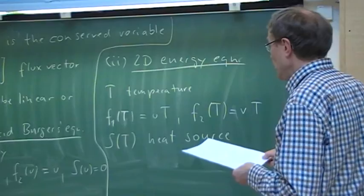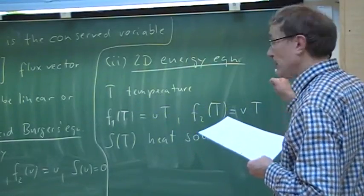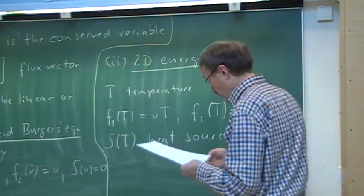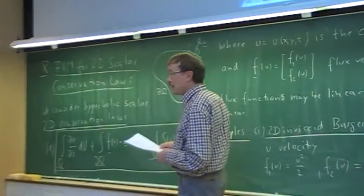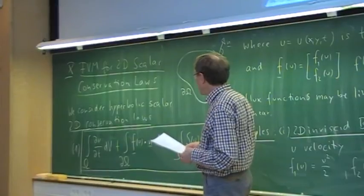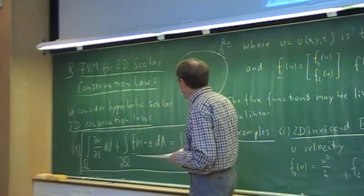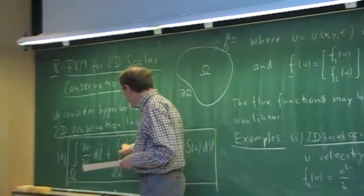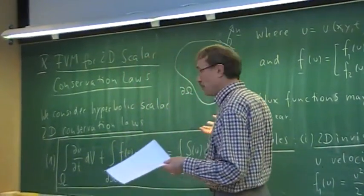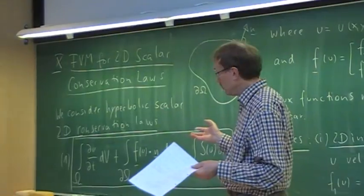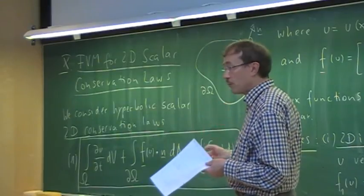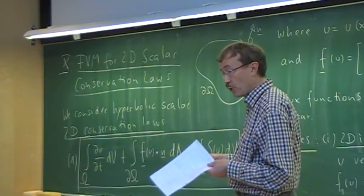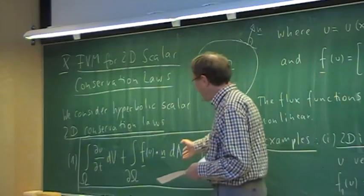So those are our examples: one nonlinear-linear and one linear. Now we go back to the conservation equation and do something from basic fluid mechanics. What we have here is a surface integral of a function times the normal. If f(u) is smooth, we can apply Gauss' theorem to convert the surface integral into a volume integral involving the divergence of f.